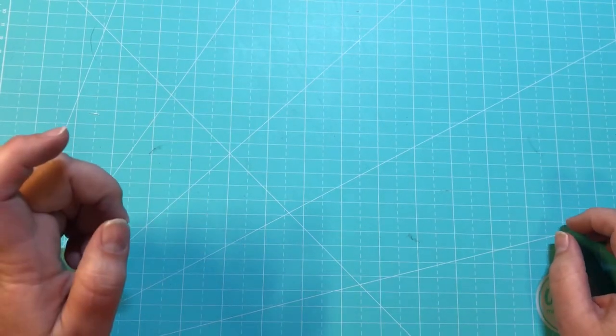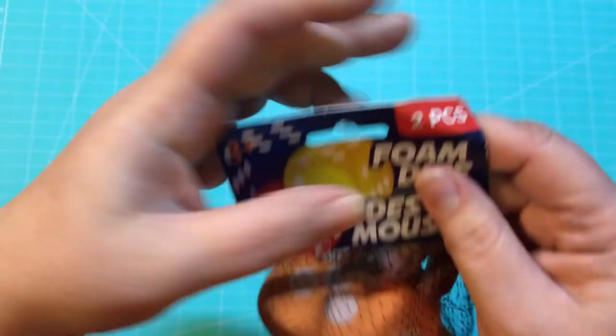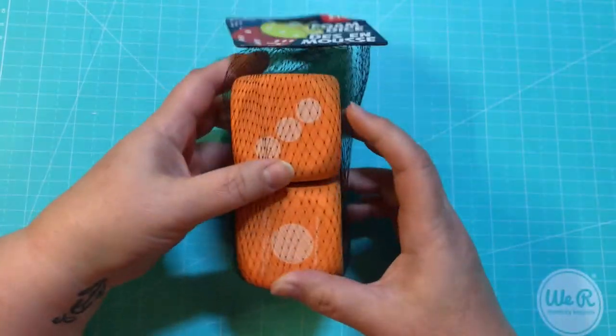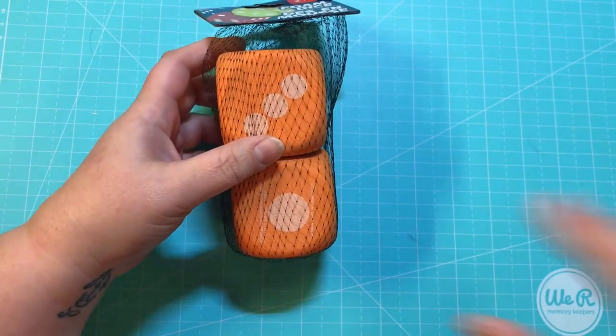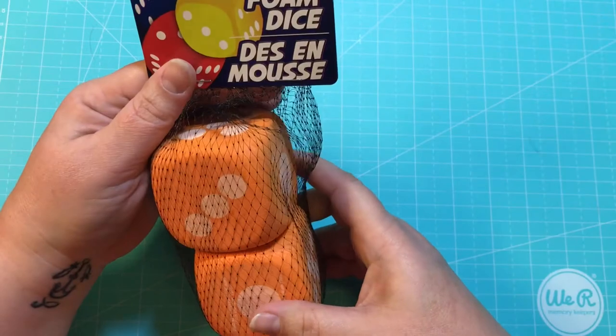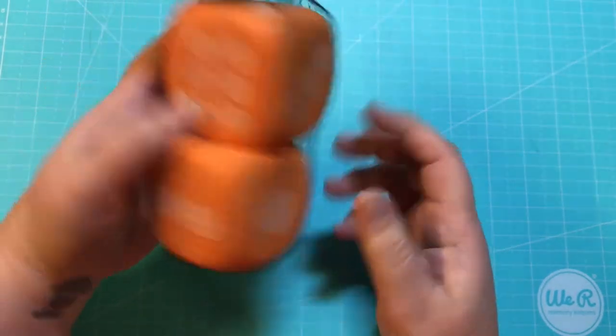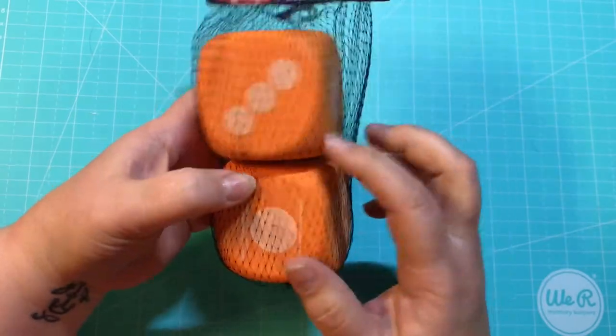So the first things you need for the game are dice. And I found, at first in my cart I had just the little regular die that you can get, but then I saw these two-piece foam die and I thought these would be much more fun, so I picked up those.